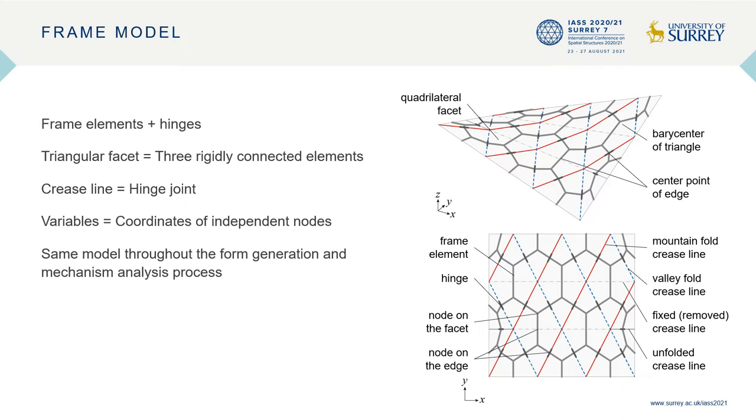First, we will briefly introduce the frame model. It consists of frame elements and hinges. If a polygonal facet with more than three vertices exists, it is divided into some triangles. The edges between these triangles are called fixed-crease lines, as shown in the figure. The variables of form generation process are nodal coordinates. The frame model can be used throughout the proposed method without reconstruction of the model.